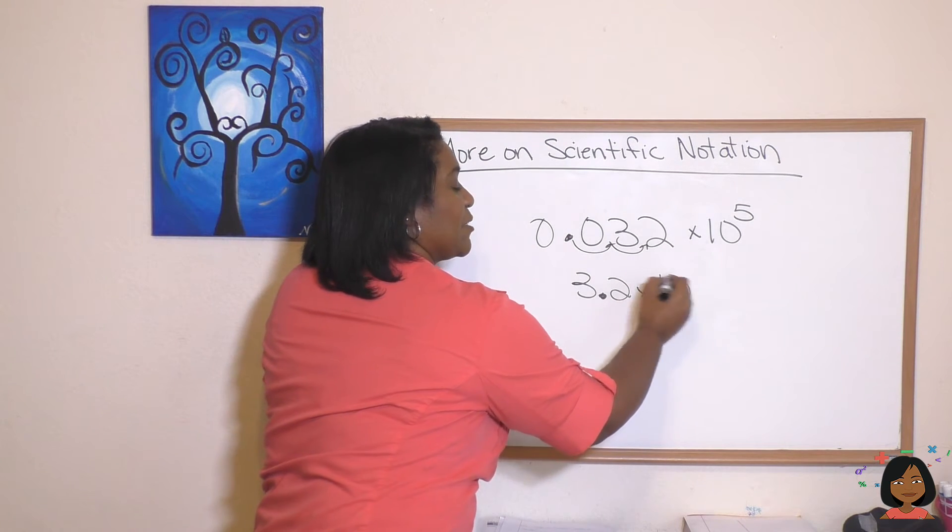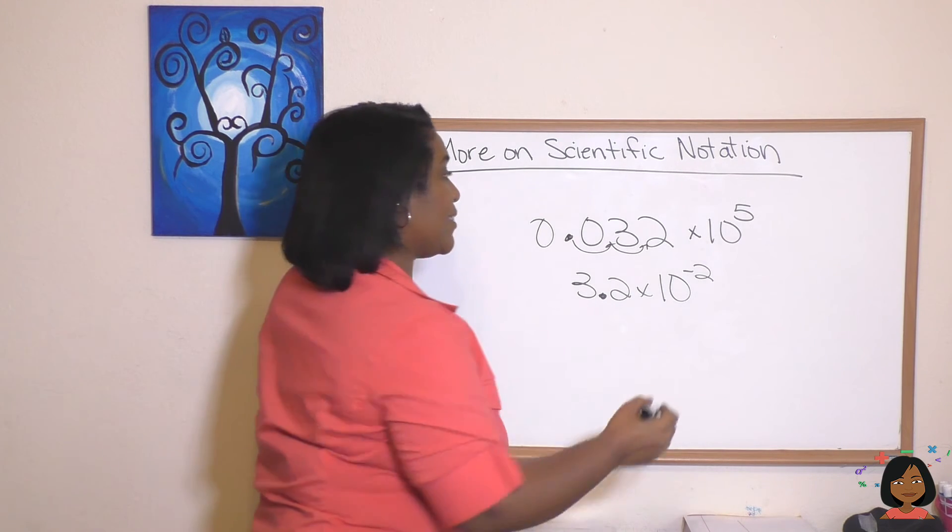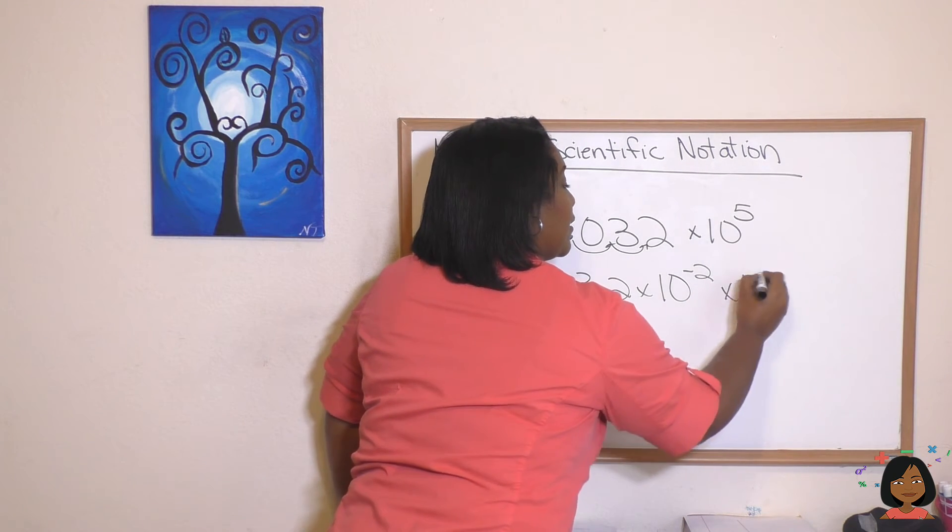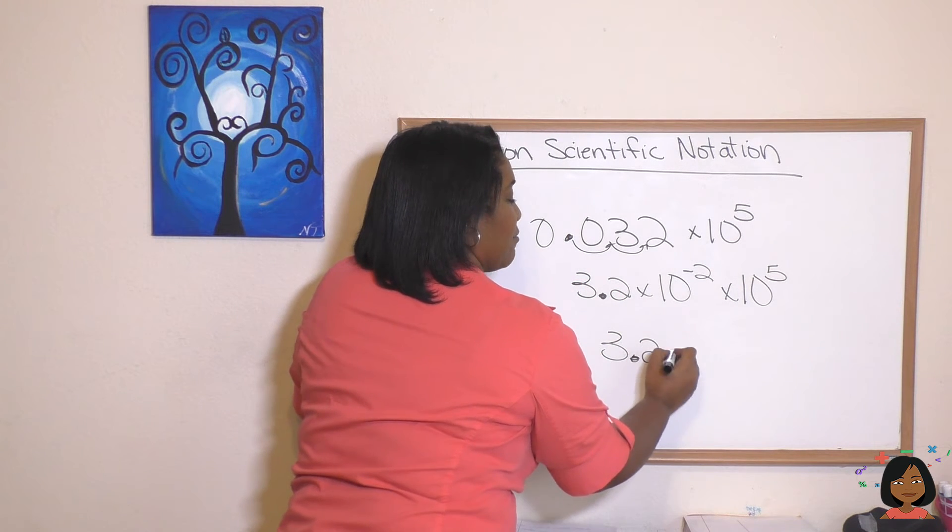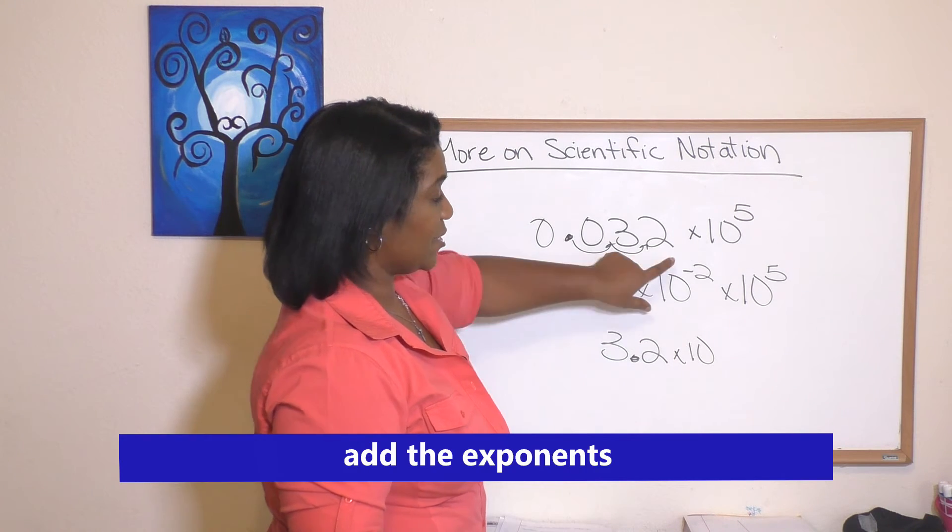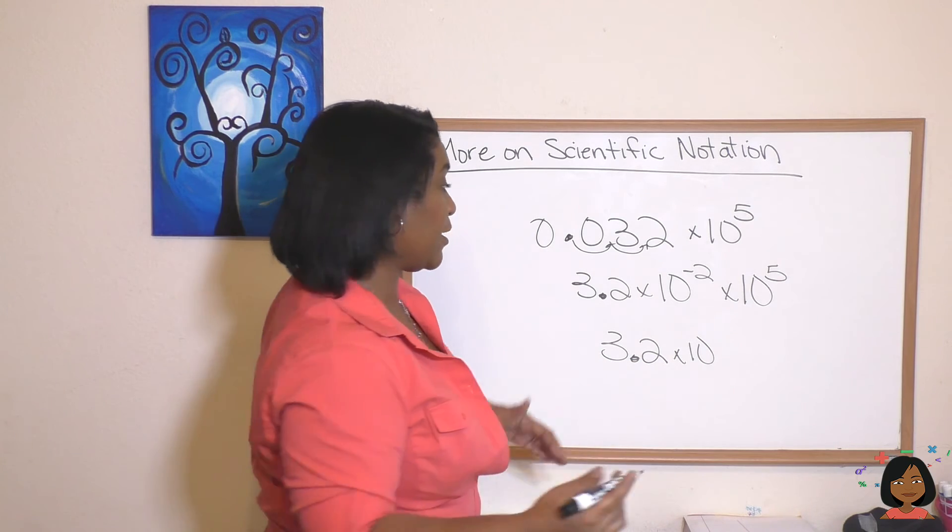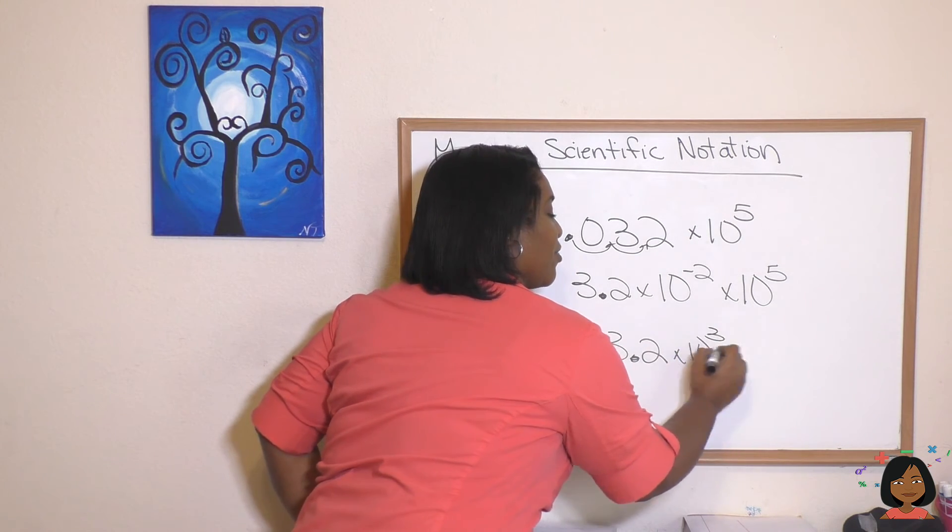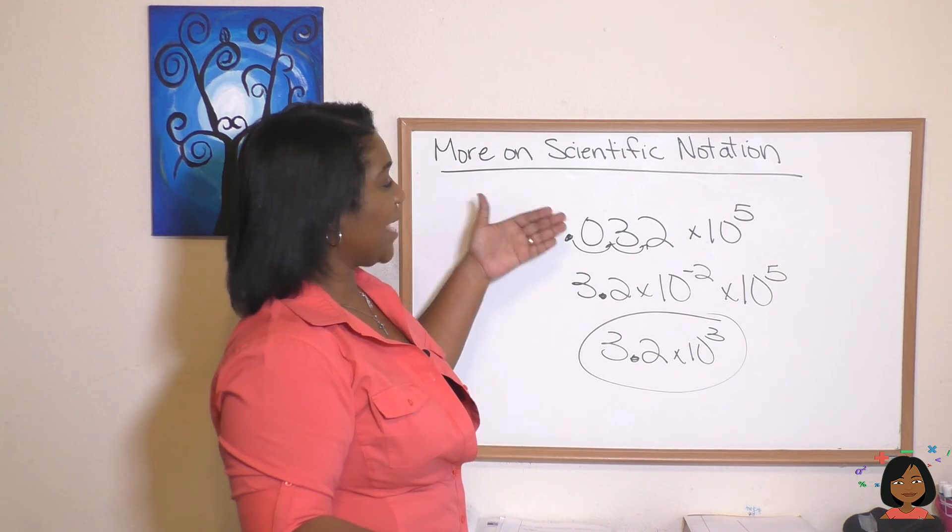Okay, down here we bring it all together. 3.2 times ten to the—add the exponents—negative two plus a five gives me a positive three—ten to the third. So the same rules apply: take that first number, put it in its scientific notation, and then add the exponents for the powers of ten.